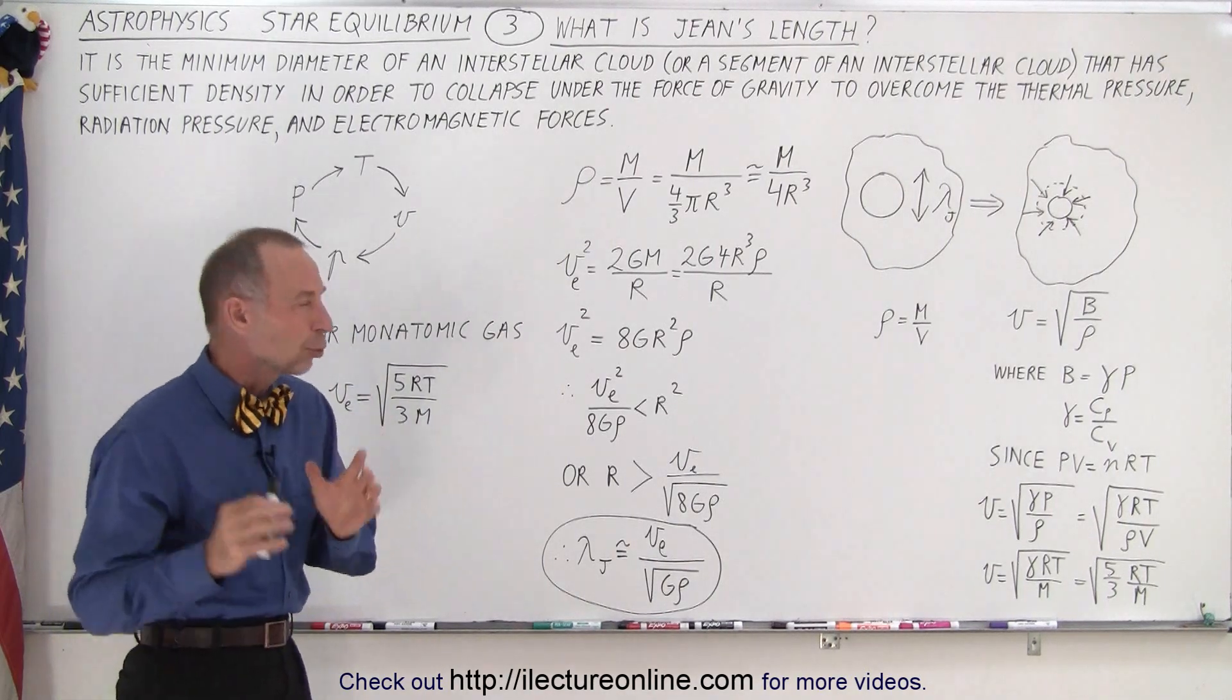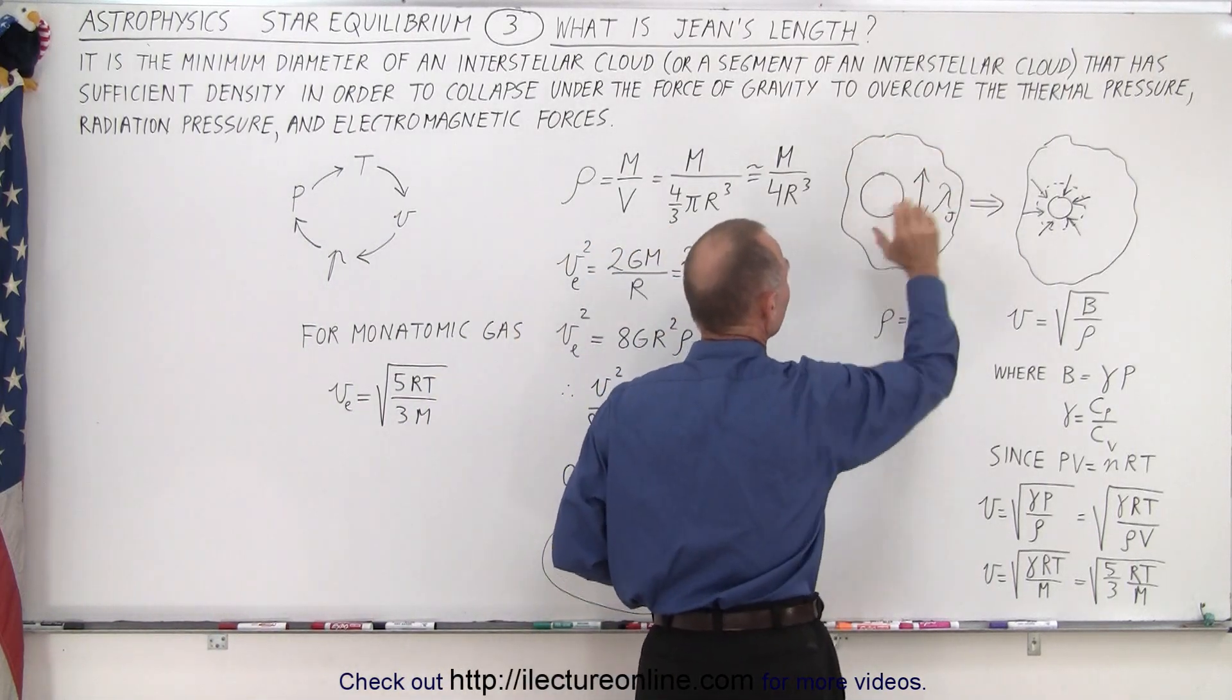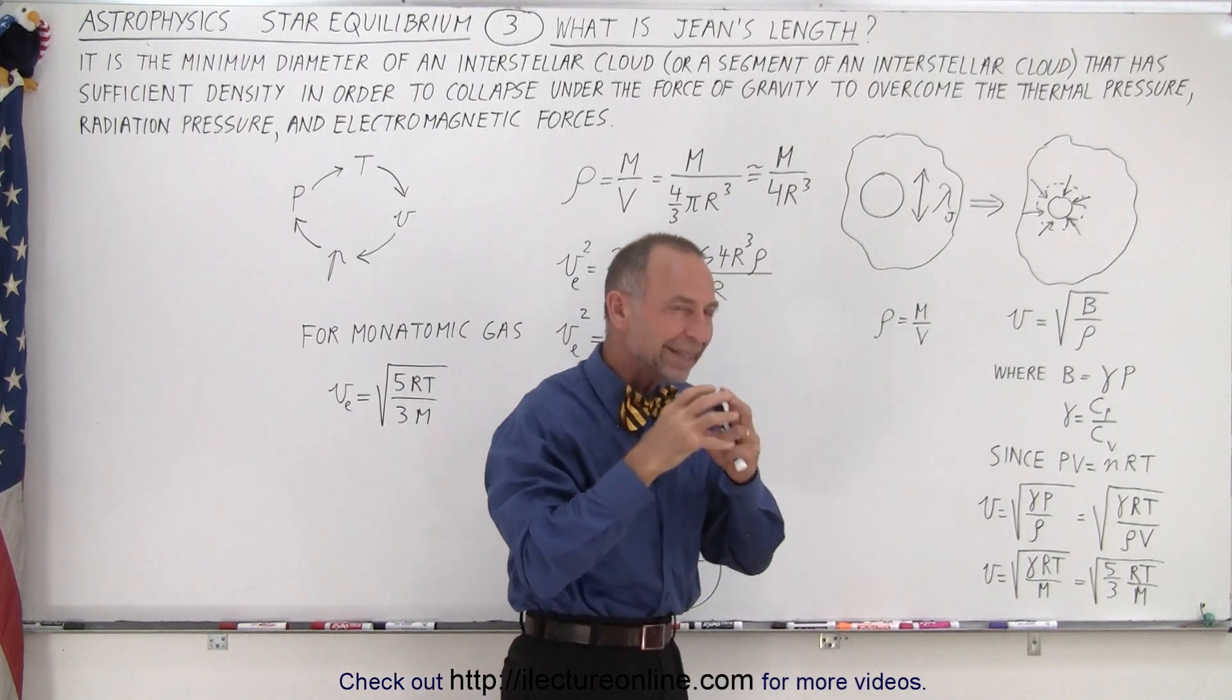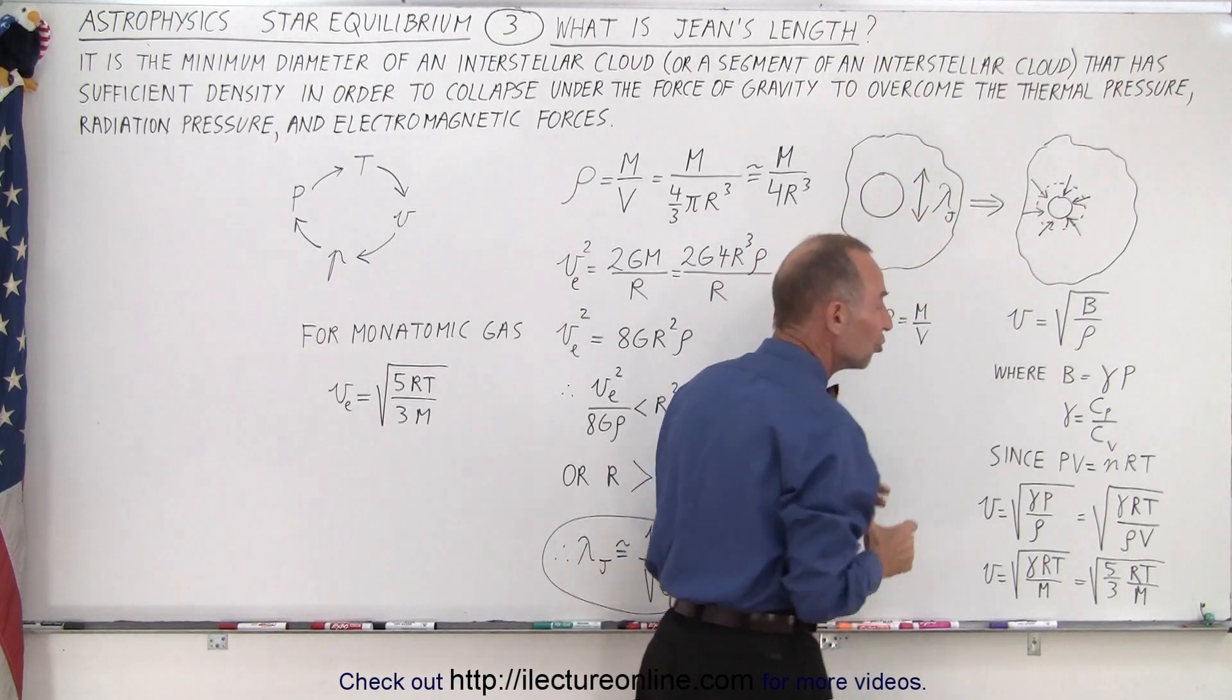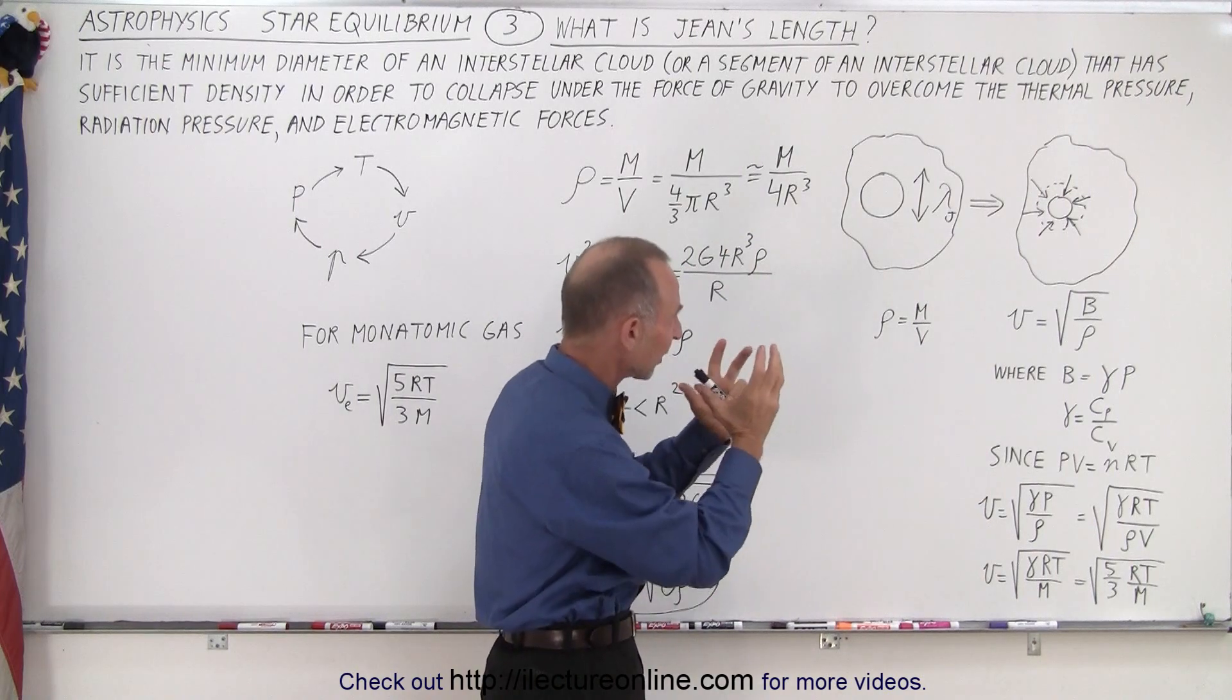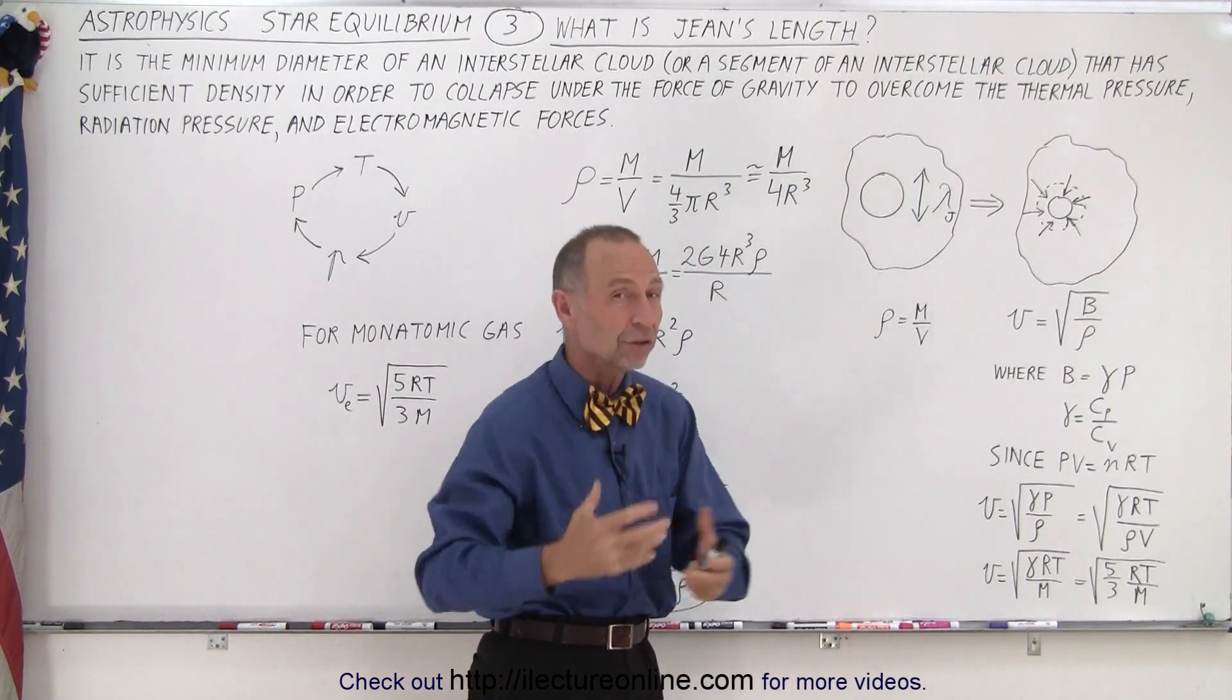So here we have a pictorial of that. Let's say we have this huge interstellar matter right there and we have a portion of that which is sufficiently dense and large enough. The diameter of it is sufficiently large and that's called the Jeans length, the minimum diameter required of that segment of that cloud so that gravity will cause it to collapse against all these other forces.